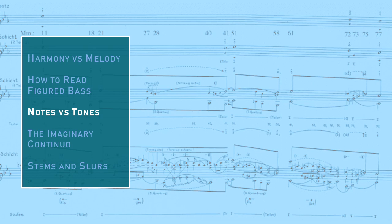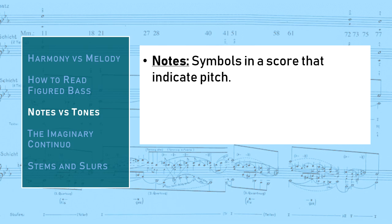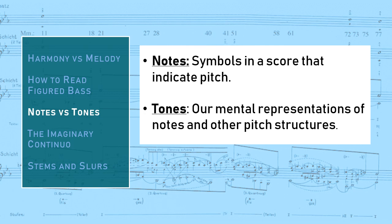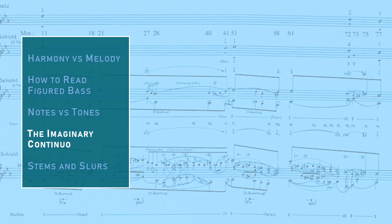Perhaps the most unique aspect of Schenker's methodology is his use of graphic analysis, which is accomplished using analytic notation. To understand analytic notation, we'll have to make a semantic distinction. Almost all musicians use the terms note and tone interchangeably as perfect synonyms, but some Schenkerians have taken to using the two terms differently. Notes are the symbols in a score that indicate pitch. They are written by the composer and are performed by the performer. Tones, on the other hand, are our mental representations of notes and other pitch structures. Schenker's graphic analyses represent relationships between tones, and they aren't in any way intended to be a replacement for the score itself.